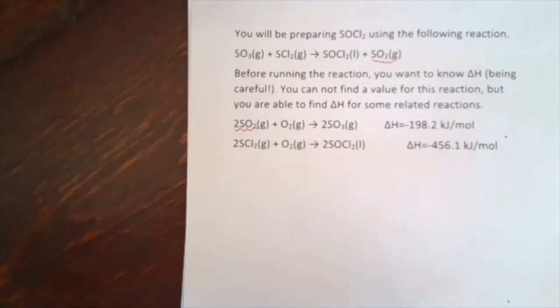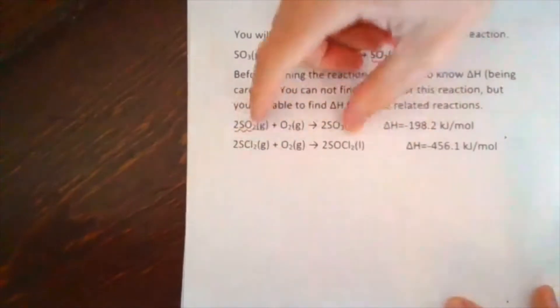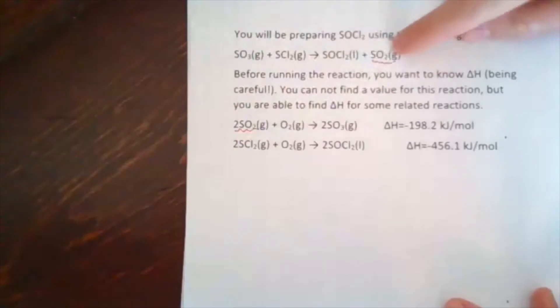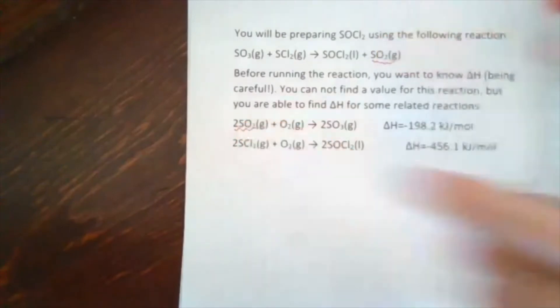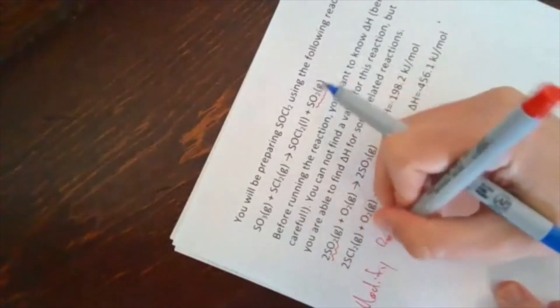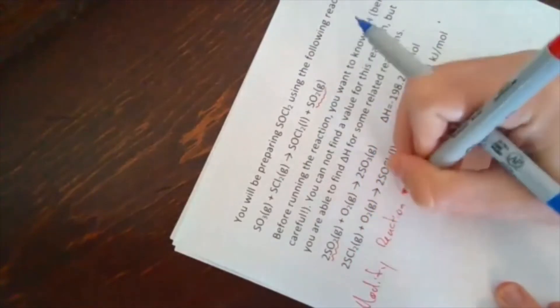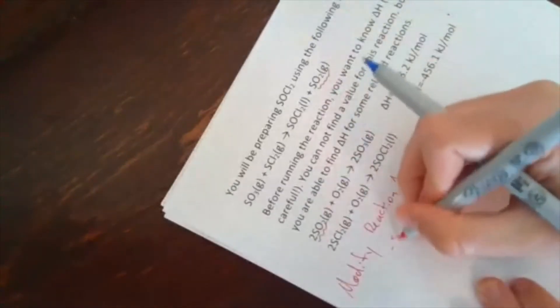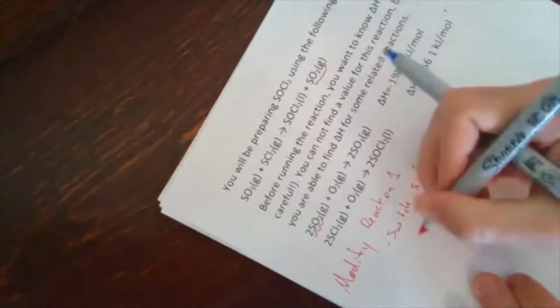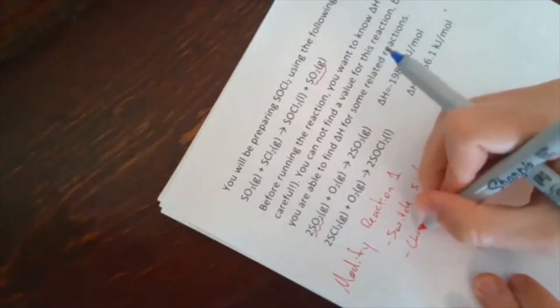And so what I can say then is, well, what I want to do is this first reaction, when I add it together, get it into a state that it adds, SO2 needs to be a product and it needs to have a coefficient of one. So what I'm going to do is, I'm going to modify reaction one. There's a couple of things I need to do. I need to switch the order or switch sides and I need to change coefficients.